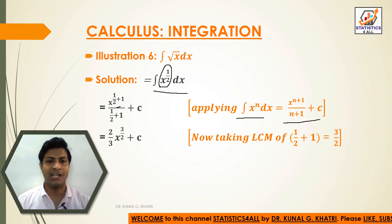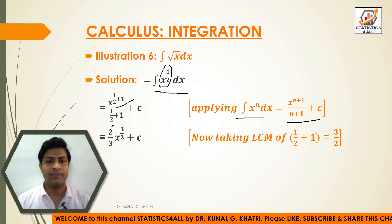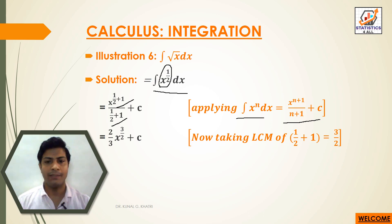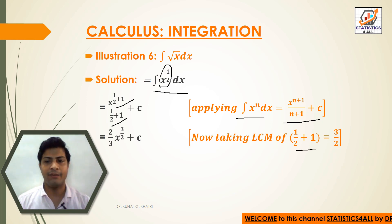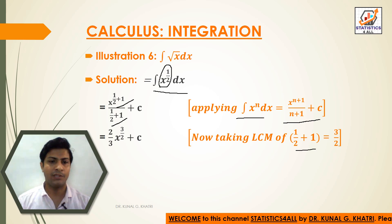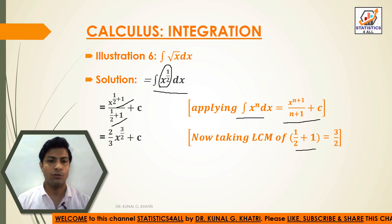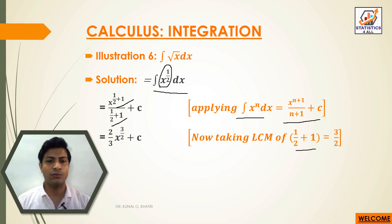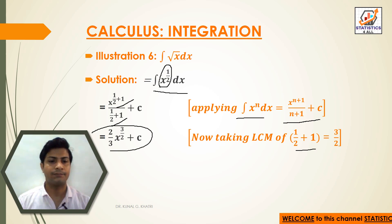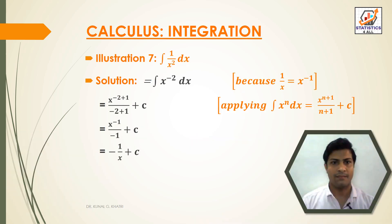By applying this formula, we have x to the power half plus 1 divided by half plus 1. Taking the LCM of half plus 1, we get 3 by 2. So putting this in the formula, we have 2 by 3 into x to the 3 by 2 plus c.